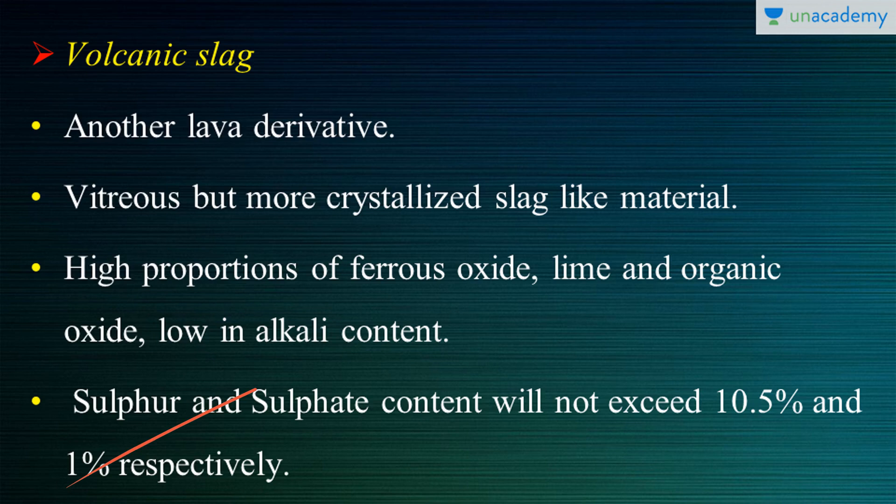This volcanic slag, which is in powder form, when it comes in contact with lime, turns into a chemical binder. This binder will provide the strength to the lightweight concrete. When the volcanic slag is combined with lime, it forms a binder which provides strength to the concrete structures — lightweight concrete specifically. This was pioneered by the Romans, who are one of the pioneers of concrete.